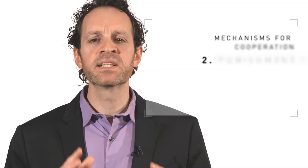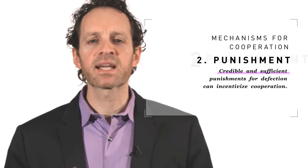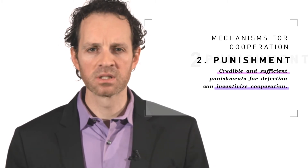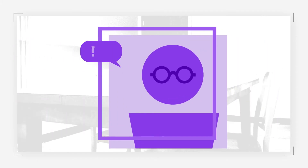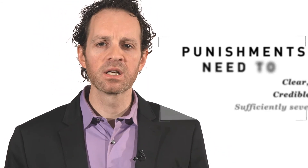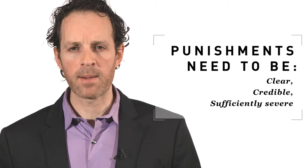A second mechanism is punishment. Credible and sufficient punishments for engaging in defection can incentivize cooperation. For example, assume that two prisoners are both members of the Mafia and have committed to a code which prevents turning against other members. Breaking this code is punishable by death. If the Mafia code is viewed as credible, this can incentivize both suspects to cooperate by remaining silent. In order for punishments to work, they must be clear, credible, and sufficiently severe to induce cooperation.